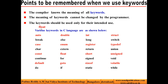If we write float, it means we are supposed to manipulate only floating point numbers such as 99.6, 3.14, and so on. Using float, we should not manipulate integer numbers. So the keywords should be used only for their intended use. In short: point number 1 — the compiler knows the meaning of all keywords; point number 2 — the meaning of keywords cannot be changed by the programmer; point number 3 — the keywords should be used only for their intended use.